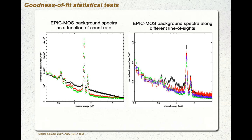Once you have fit your spectrum and have a best-fit model, a useful exercise is to use the fakeit command in XSPEC to simulate what your source would look like — this will be covered in the session on proposal preparation.